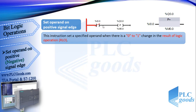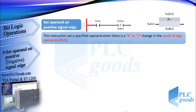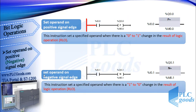When I 0.0 changes to close, the RLO changes from 0 to 1, which this instruction detects. So this instruction will change the state of Q 0.0 from 0 to 1 for only one program cycle, which is about 5 ms. Similarly, set operand on negative signal edge works when there is a 1 to 0 change in the RLO.